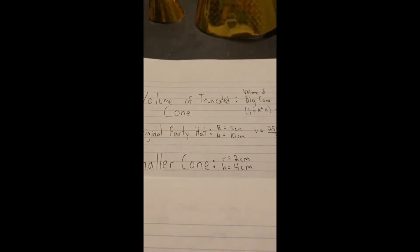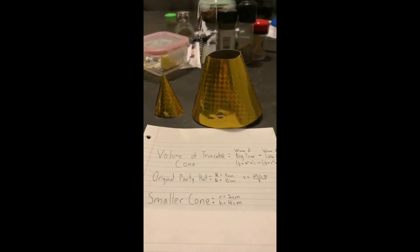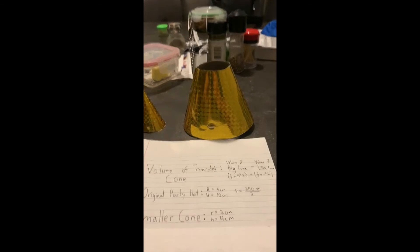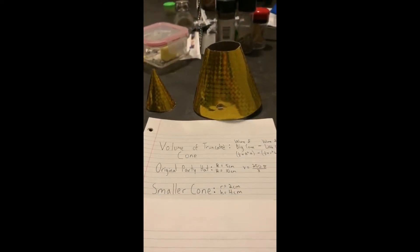We already figured out the volume of the first cone, but I'll write the dimensions again: the radius was 5, the height was 10, and the volume was 250π/3. I used capital R and H for the big cone to avoid confusion with the small cone. The smaller cone has a radius of 2 and a height of 4. Now you can plug in those numbers to figure out what the volume of just the truncated piece would be — you can pause and work through it if you'd like.